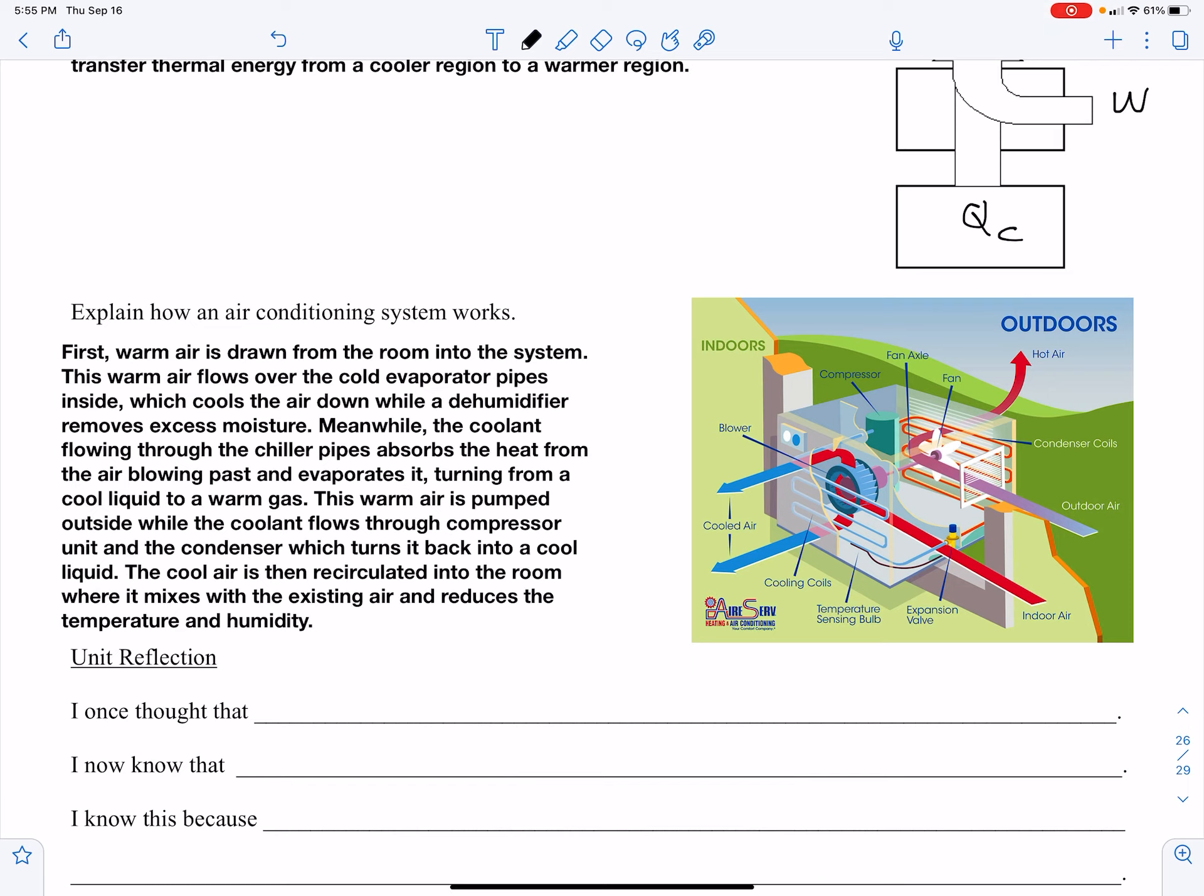Meanwhile, the coolant flows through a compressor while compressing this fluid. It's going to turn back into a cooler liquid. The cool air will then recirculate into the room where it's going to mix with the existing air and reduce the temperature and humidity. It also removes particulates. That's another benefit of air conditioning systems and central air.